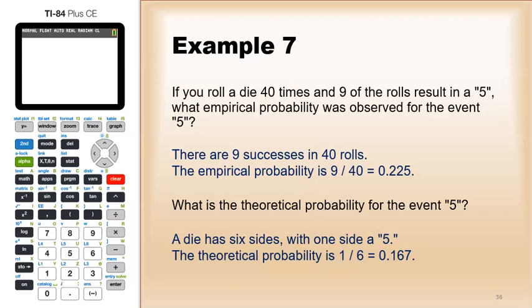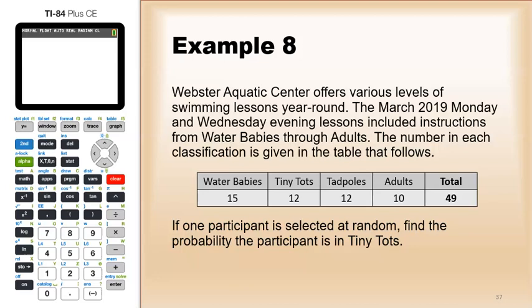Webster Aquatic Center offers various levels of swimming lessons year-round. The March 2019 Monday and Wednesday evening lessons include instructions from Water Babies through Adults. The number in each classification is given in the table: 15 Water Babies, 12 Tiny Tots, 12 Tadpoles, 10 Adults, for a total of 49. If one participant is selected at random, find the probability the participant is in Tiny Tots.